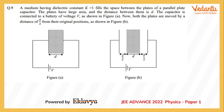Hi students, we are now discussing question number 9 of paper 1 of physics of JEE Advanced 2022. This question says that there is a capacitor with a dielectric medium in between, and then we increase the separation between the plates so that the separation becomes double.